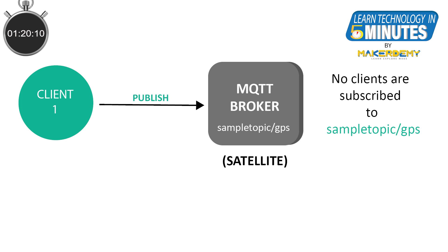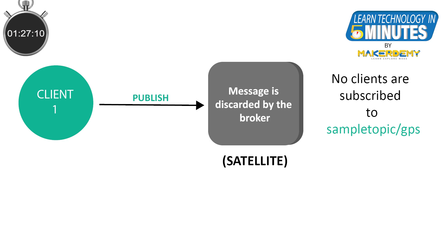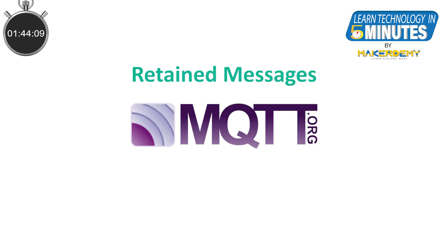In normal conditions, the publisher publishes a message to a topic, and if no clients are subscribed to that topic at the time of publishing, the message is removed by the broker. If we can somehow store or retain this message in the broker itself and then forward this message whenever the disconnected client comes back online, the client can at least know the last good value of the publisher client. This is where the retained messages concept of MQTT comes into the picture.